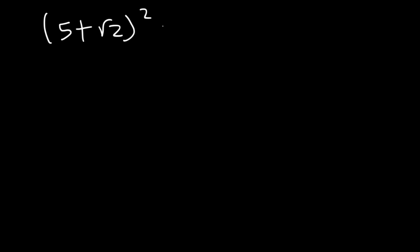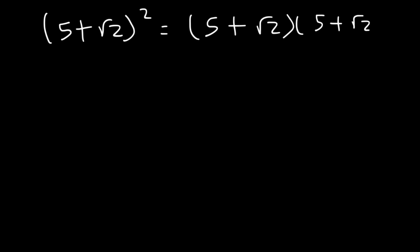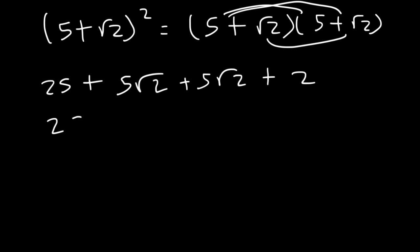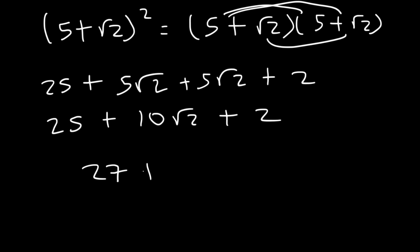Let's try one more: the quantity 5 plus root 2 squared. 5 times 5 is 25. The two middle terms will each be 5 root 2, giving 10 root 2. And the last term is simply 2. So 25 plus 2 is 27, giving the answer 27 plus 10 root 2.